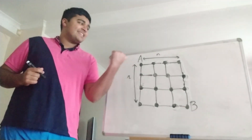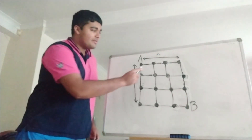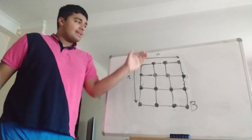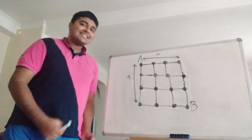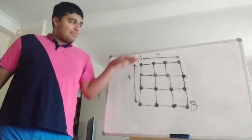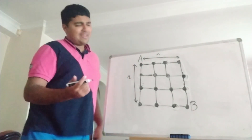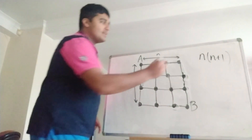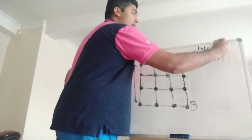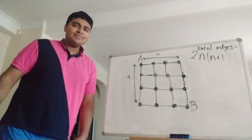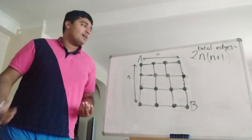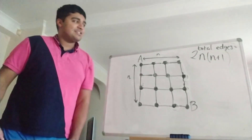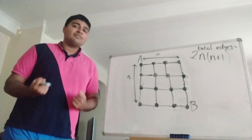The first thing we want to do is count the number of edges in this graph. In the top row we have n horizontal edges, and there are n+1 such rows, giving n(n+1) horizontal edges. By symmetry there are the same number of vertical edges, so the total number of edges is 2n(n+1). This is already an upper bound for the maximal path length, since any path can use at most this many edges. But this upper bound is too loose — it's not good enough to solve the problem.